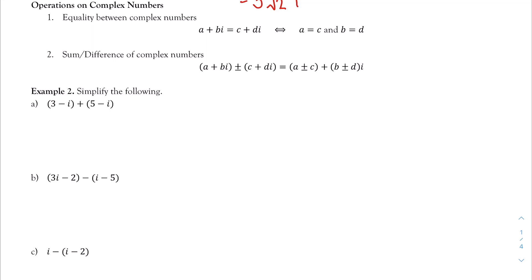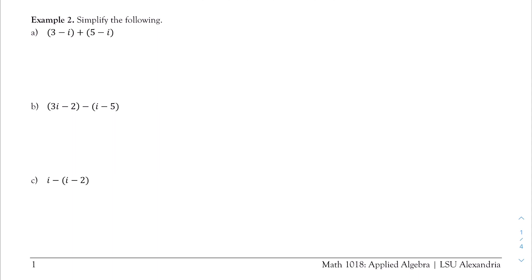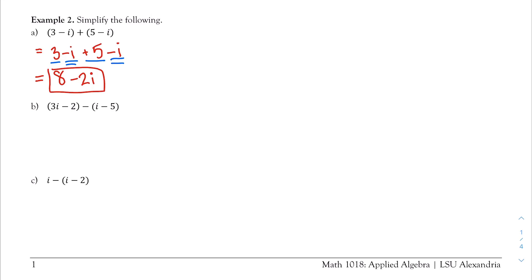Example 2, part a: simplify (3 − i) + (5 − i). To add these, I simply combine like terms — numbers with numbers, i's with i's. I have 3 plus 5, giving me 8. Then negative i minus i: that's negative 1 minus 1, giving me negative 2i. So the final answer is 8 minus 2i. Make sure you're careful about negatives and positives.